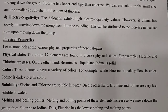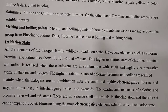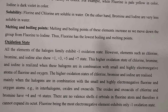Next, the most important part: oxidation state, followed by the anomalous behavior of fluorine. All the elements of the halogen family exhibit a -1 oxidation state. However, elements such as chlorine, bromine, and iodine also show +1, +3, +5, and +7 states down the group.